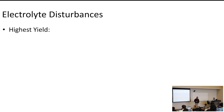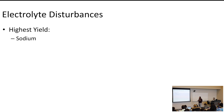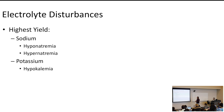Electrolyte disturbances are so awesome. The highest yield electrolyte abnormalities you need to know are going to be sodium — specifically hyponatremia and hypernatremia — and potassium, including hypokalemia and especially hyperkalemia.